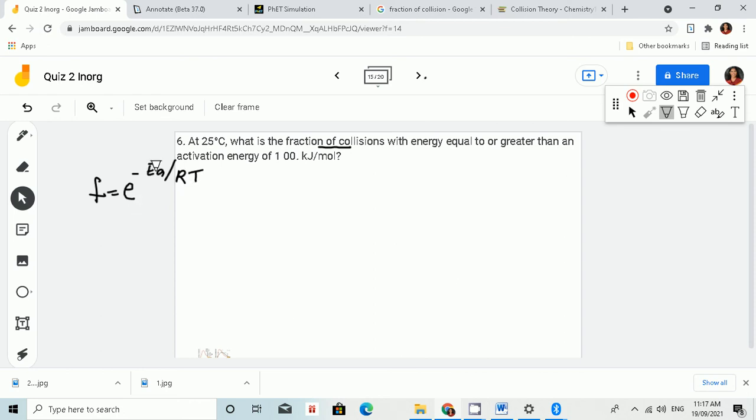We have the value of Ea, the activation energy, and we have R, which is the universal gas constant, and we have the value of T. Now, all we have to do is just plug in those values.